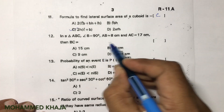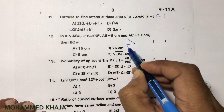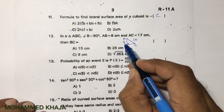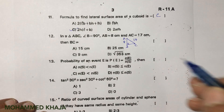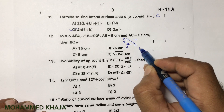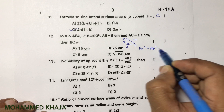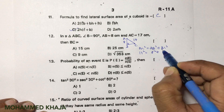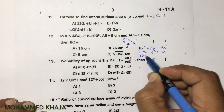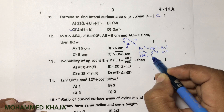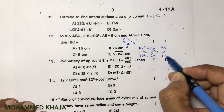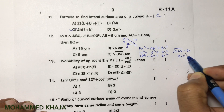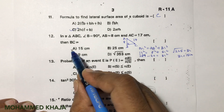In triangle ABC, angle B is 90°, AC = 17, AB = 8. Applying Pythagoras' theorem: AC² = AB² + BC², so 17² = 8² + BC², giving 289 = 64 + BC². Transposing: BC² = 225, so BC = 15 cm. The correct option is A.